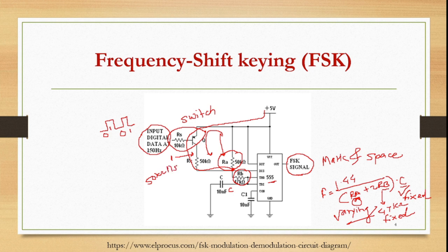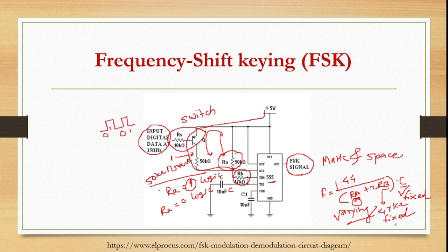When the input is logic 1, the transistor turns on, making the 50 kilo-ohm and 50 kilo-ohm resistors parallel to each other. This parallel combination creates one value of RA for logic 1, while the standalone RA applies for logic 0. This produces the mark and space frequencies respectively.